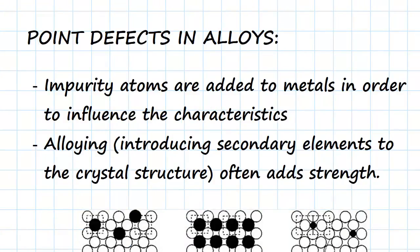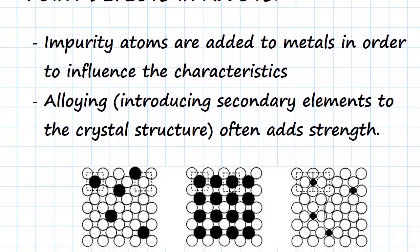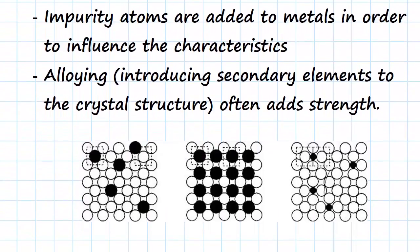In the situation of an alloy, impurity atoms are added to the metal in order to influence the overall characteristics. By alloying and adding a new element into the crystal solution, we are introducing secondary elements to the crystal structure. This can often add benefits such as strength, which is mostly why alloying is used.